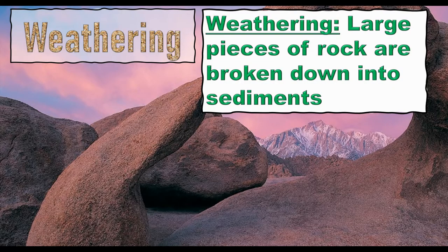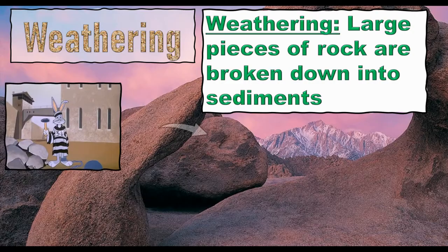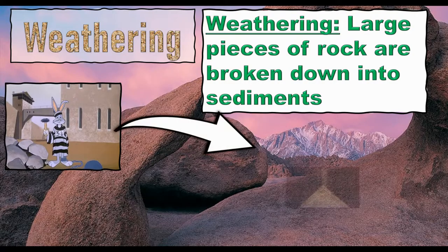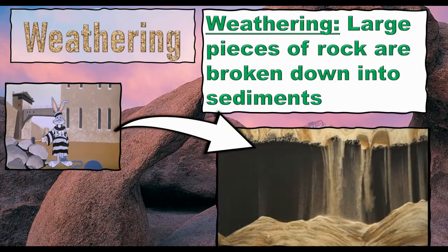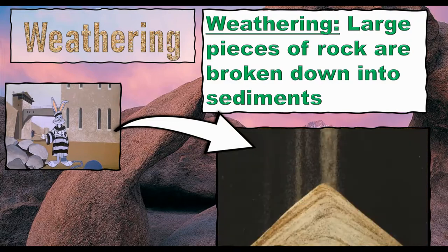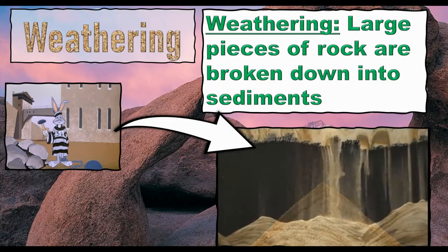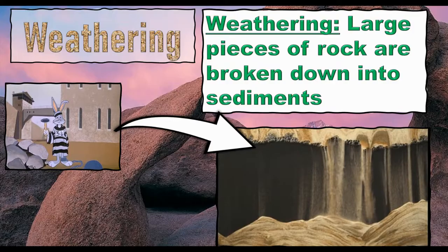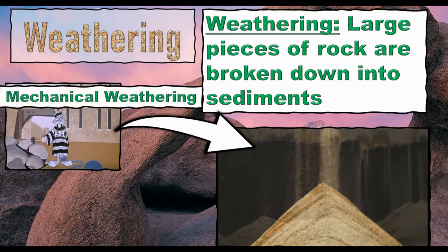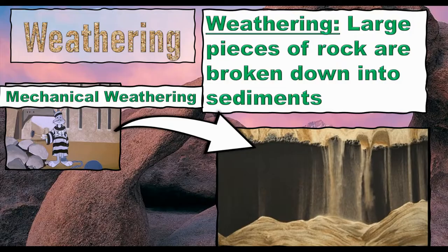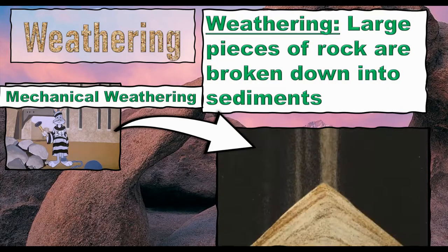There are a couple different ways you can do this. If you want to do this physically — actually break apart a rock, whether you're Bugs Bunny, a river, a glacier, or what have you — if you're taking a large rock and physically breaking it apart into smaller pieces, then you are doing what's called mechanical weathering. That's one type of weathering.